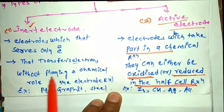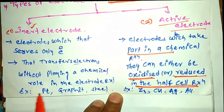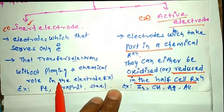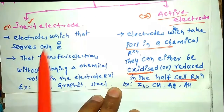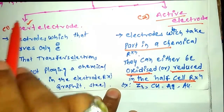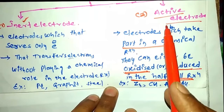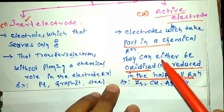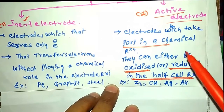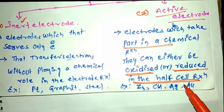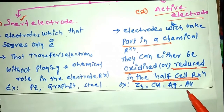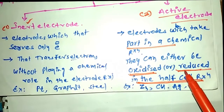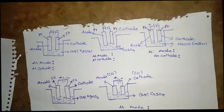So inert electrodes cannot play a chemical role in the reaction, but they transfer electricity from one place to another. The character of active electrodes is that they can be involved in the chemical reaction — they are oxidized or reduced in the cell reaction. Examples of active electrodes are zinc, copper, silver, and iron.